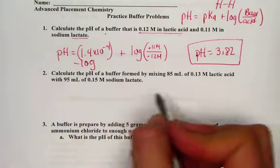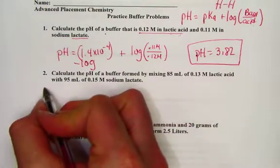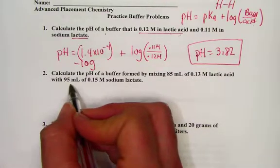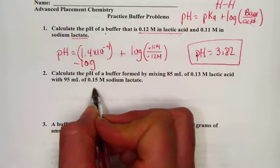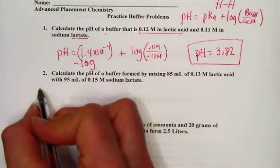This problem involves a little bit more work in the sense that we're adding volumes. The concentration of 0.13 molar lactic acid, 95 mL of the 0.15 molar sodium lactate, create a new total volume.